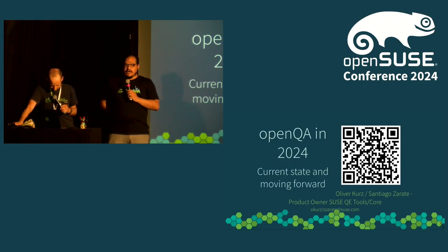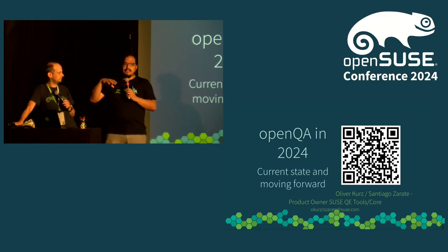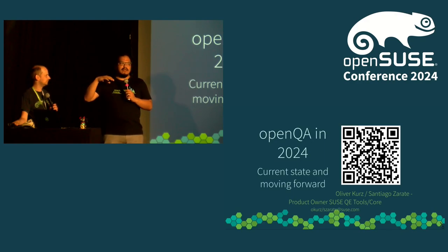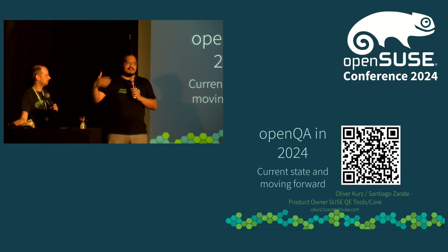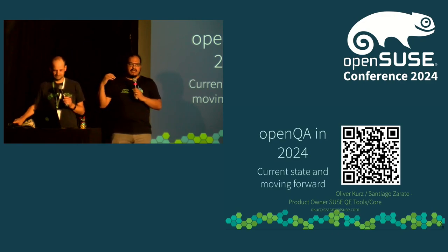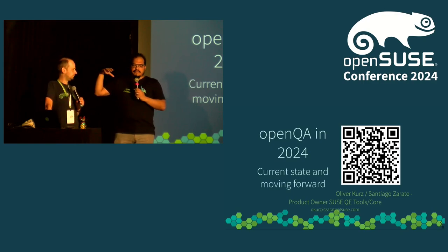We want to talk about what is the current state of OpenQA as a project, what are we doing right now, and what are the plans moving forward — how is it looking in the future, how is the project growing and evolving. Because it's not just OpenSUSE anymore, it's not SUSE anymore. There are a few communities around, including GNOME and Fedora.